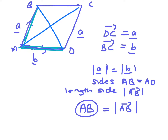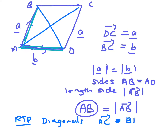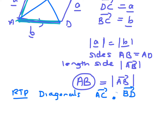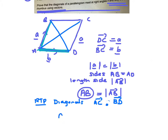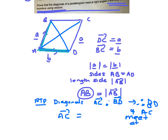Required to prove: we want to prove that diagonal AC is perpendicular to diagonal BD. We're going to do it using the dot product. So if we can show the dot product of AC and BD equals zero, that means they meet at 90 degrees — that's what we're trying to prove.